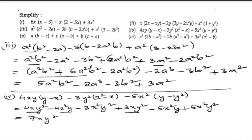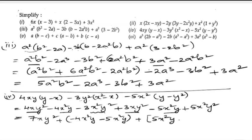Next are the x²y terms: minus 4x²y minus 5x²y. And we also have minus 3x²y² and minus 5x²y². Adding the x²y terms: minus 4 minus 5 is minus 9, giving minus 9x²y.